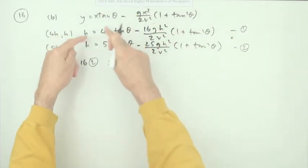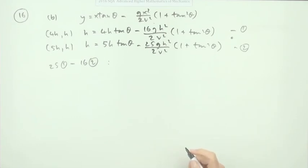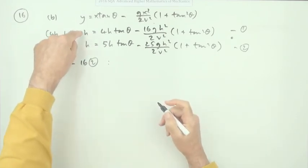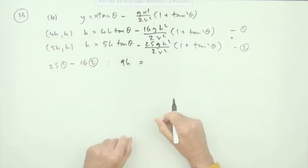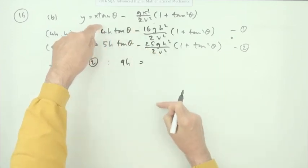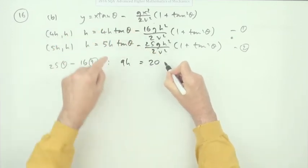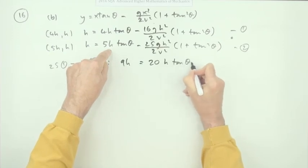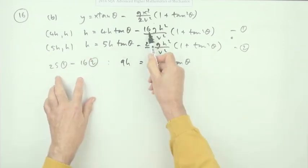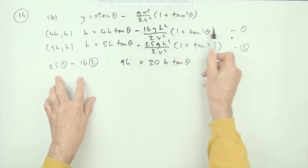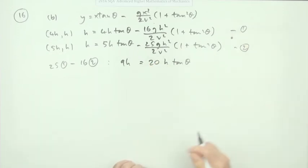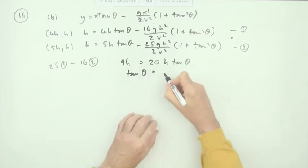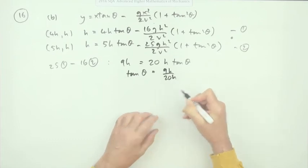25 of that take away 16 of that leaves you 9h. 25 of that is 100 minus 16 that's 80, leaves you 20h tan theta. 25 times 16 and 16 times 25 means these two terms are numerically identical so they disappear. Finally I've got tan theta equals 9h over 20h which is 9 upon 20.